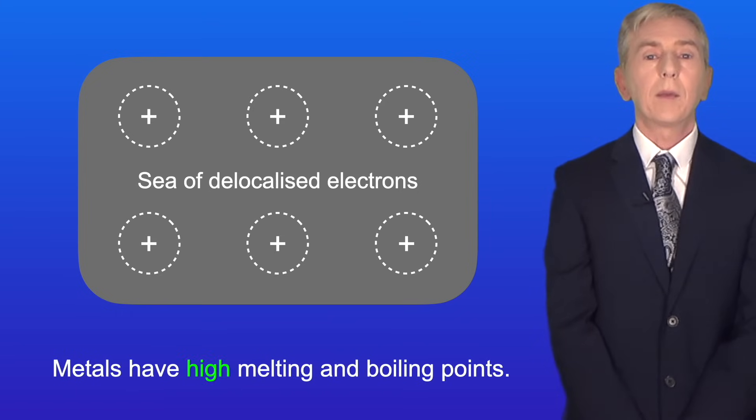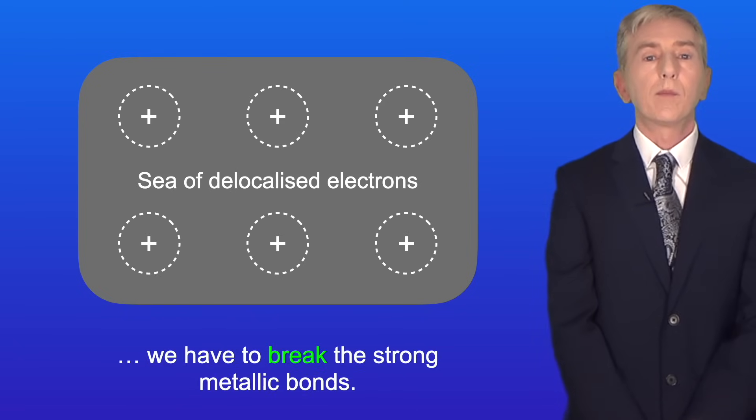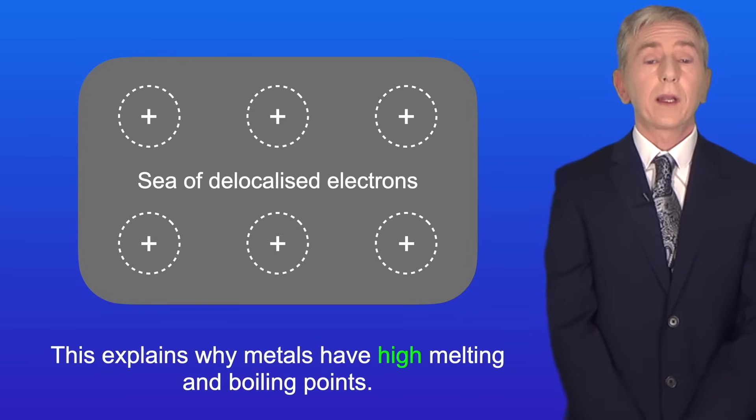Now metals have high melting and boiling points. In order to melt a metal we have to break the strong metallic bonds. This requires a great deal of energy and this explains why metals have high melting and boiling points.